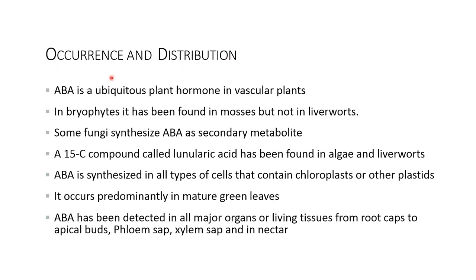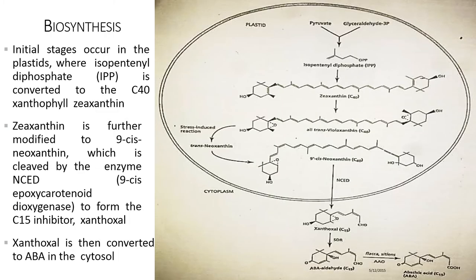Occurrence and distribution: abscisic acid is a ubiquitous plant hormone in vascular plants. In bryophytes, it has been found in mosses but not in liverworts. Some fungi synthesize abscisic acid as secondary metabolites. A 15-carbon compound called lunularic acid has been found in algae and liverworts. Abscisic acid is synthesized in all types of cells that contain chloroplasts and other plastids, occurring predominantly in mature leaves. It has been detected in all major organs, from root cap to apical bud, and in phloem sap, xylem sap, apical bud, and nectar.